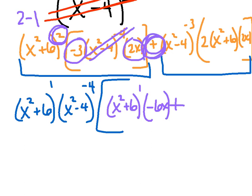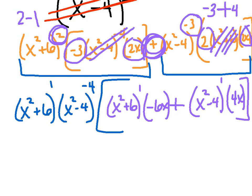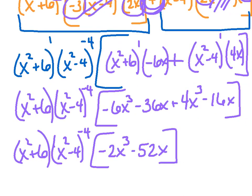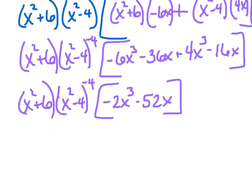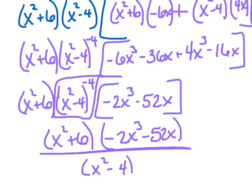Then there's a plus sign. On the second side, you pulled out x squared plus 6 completely. Take the exponent you have minus what you pulled out — you get 1, so x squared minus 4 to the first, times 4x. Keep cleaning it up, and you end up with negative 2x cubed minus 52x. To rewrite further, move the negative exponent piece to the bottom: x squared plus 6 times the quantity negative 2x cubed minus 52x, all over x squared minus 4 to the fourth.